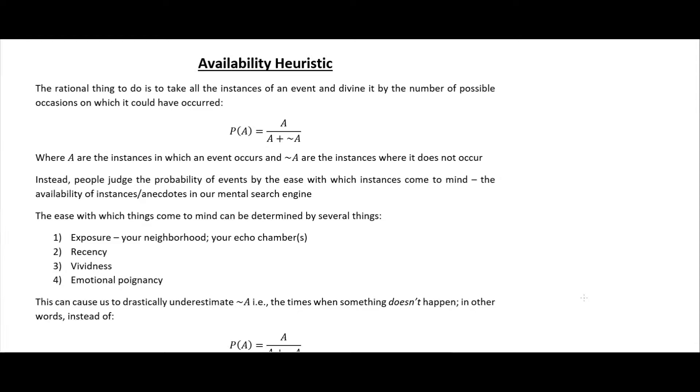The availability heuristic is similar in that it's sort of reducing the denominator in our probability. So I have this set up here where we can think of A as the times when something happens, and tilde A is the times when something doesn't happen.